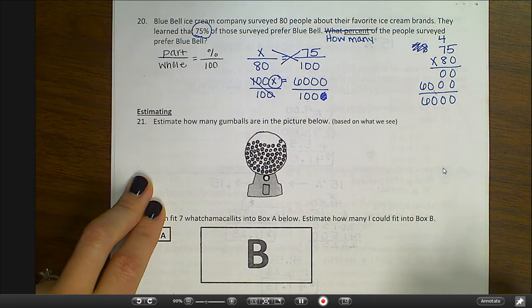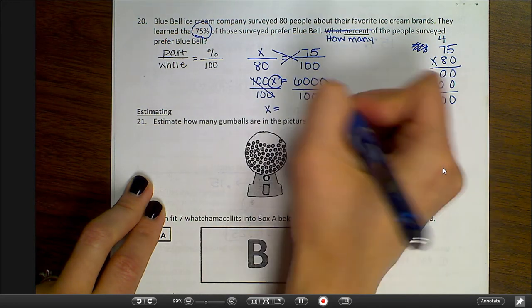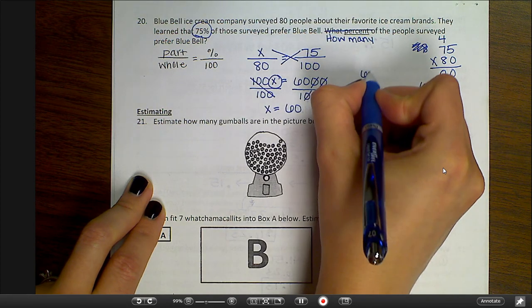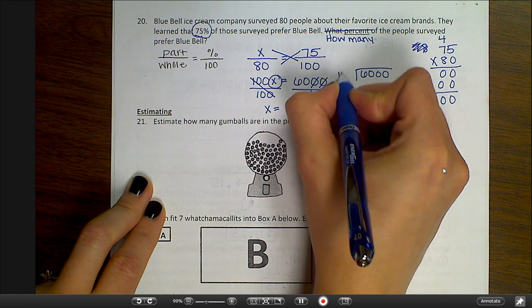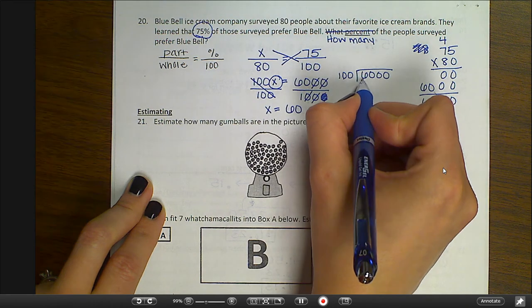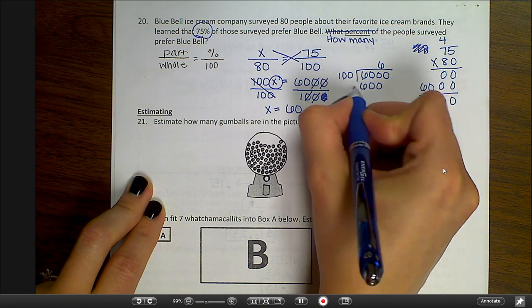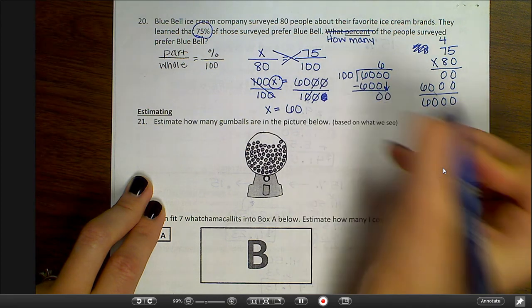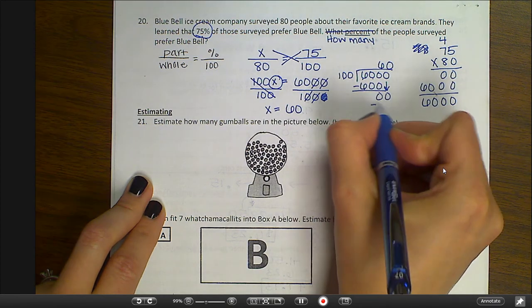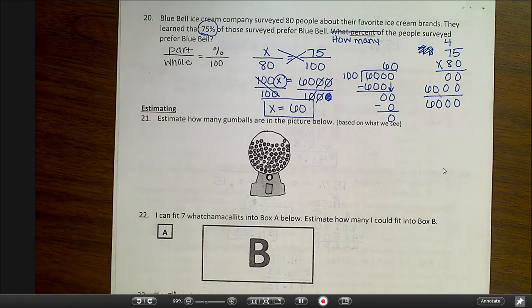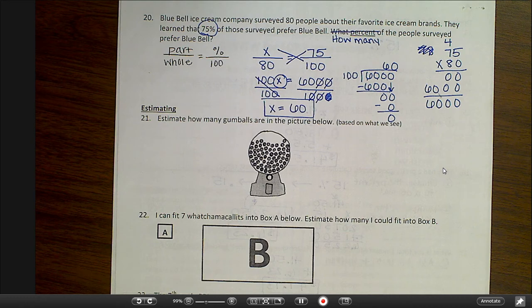So I'm going to divide 6,000 by 100 also. So X equals, cross out my zeros, 60. Or you could actually do 6,000 divided by 100. 100 goes into 6. No, it doesn't go into 60. It goes into 600 six times. I get zero. Got to finish out that problem. 100 goes into zero, zero times. And I get the same 60. So 60 people prefer Bluebell. Let's do a reality check. 75% is 3 fourths of 80. I'm sorry, is 3 fourths. And 60 is 3 fourths of 80. So my answer does make sense.